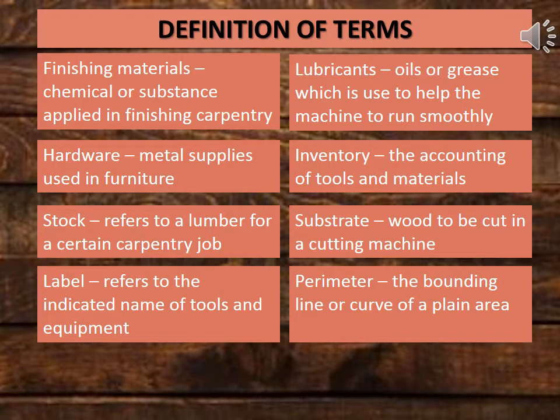Definition of Terms. Finishing Materials: chemical or substance applied in finishing carpentry. Hardware: metal supplies used in furniture. Stock: refers to lumber for a certain carpentry job. Label: refers to the indicated name of tools and equipment. Lubricants: oils or grease used to help the machine run smoothly. Inventory: the accounting of tools and materials. Substrate: wood to be cut in a cutting machine. Perimeter: the bounding line or curve of a plane area.